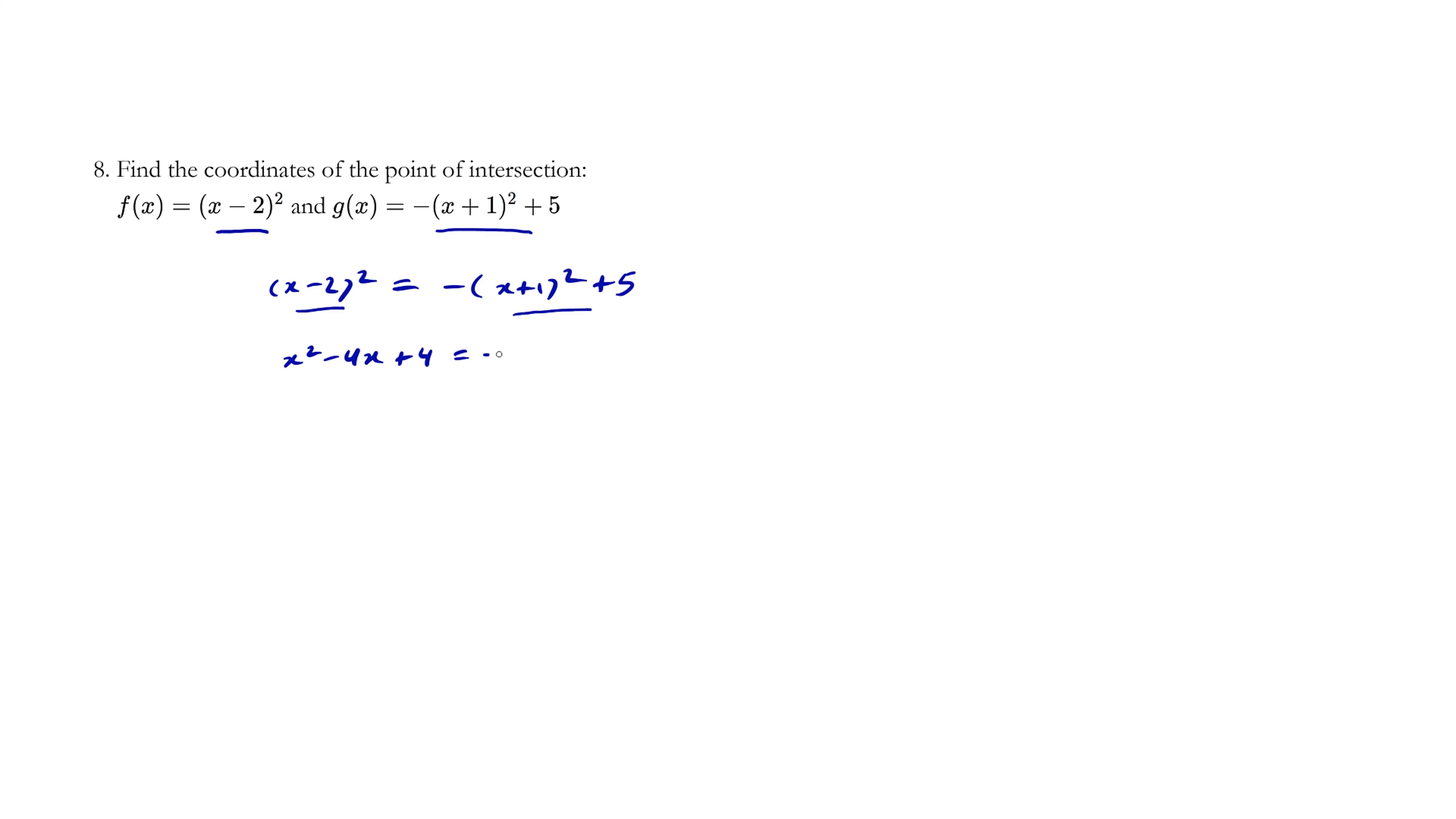And I recommend you just keep the negative sign here, put some big square brackets, and focus on expanding out the inside here, which is x squared plus 2x plus 1. And the plus 5 remains the same.